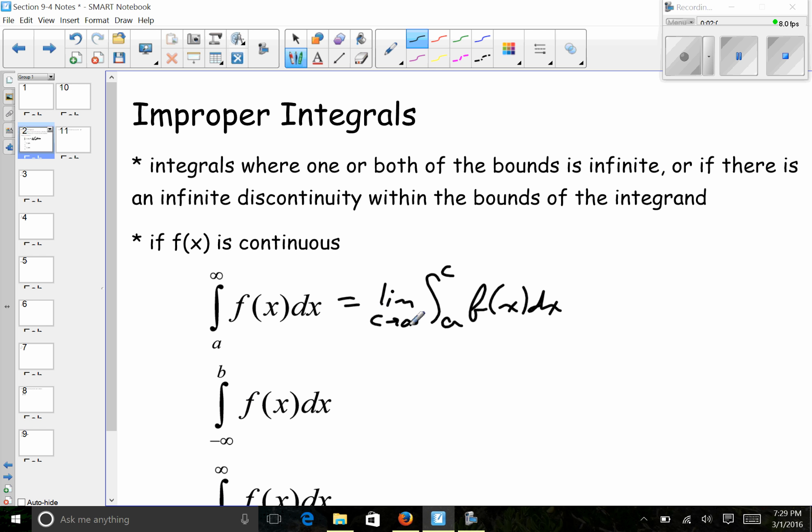Similarly, if negative infinity is my lower bound, I just replace it with a dummy variable, and again I'm just going to use c because it's convenient. So that I now have a definite integral that I can evaluate and then do the limit of this integral as c approaches negative infinity.